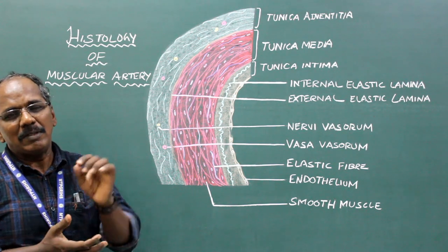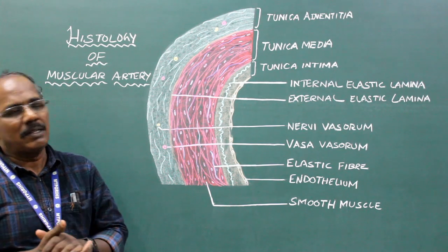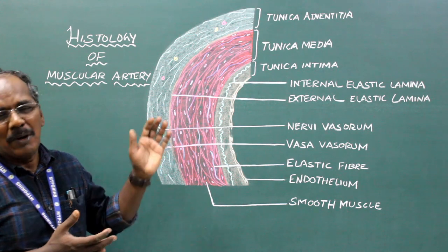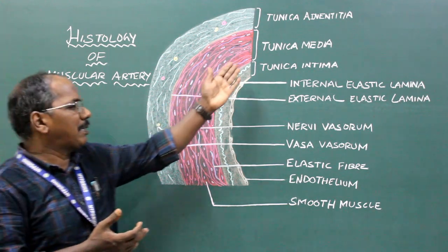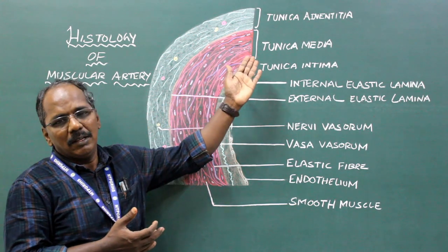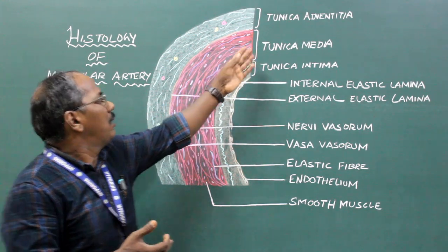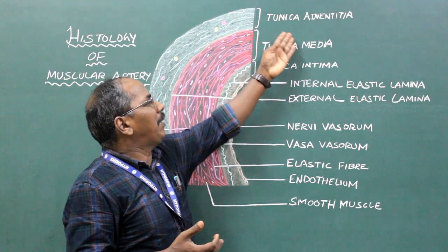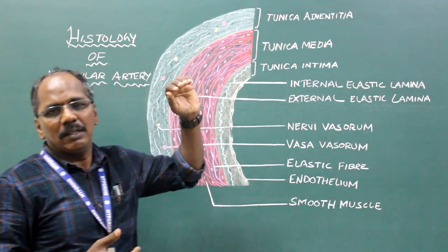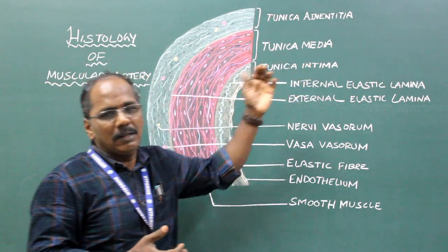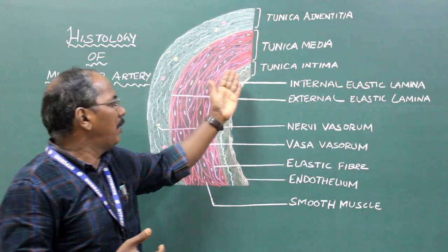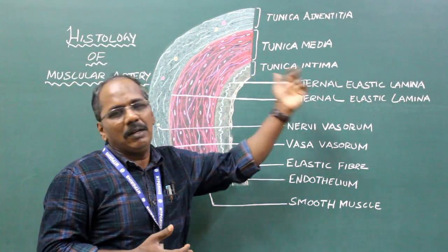Each one has three coats or tunics, namely Tunica Adventitia, Tunica Media, and Tunica Intima.